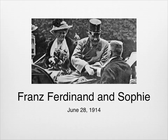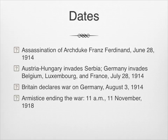On June 28, 1914, Franz Ferdinand and Sophie were visiting Sarajevo when they were assassinated by a Serbian national. Franz Joseph thought this a great opportunity to extend his empire into the Balkan states on his southern border. The assassination of the Archduke is generally considered the catalyst for the start of the war.